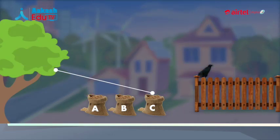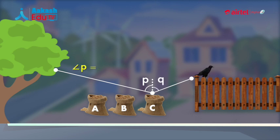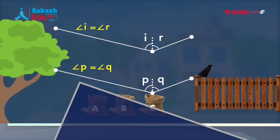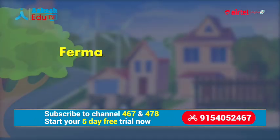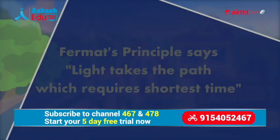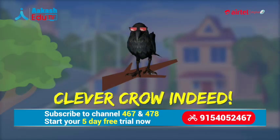For opting C and finally reaching the fence, aap dekhenge angle P ki value angle Q ke equal hai. In other words, this path resembles the path of light where incident and reflected angles are equal — or the famous Fermat's principle of optics ke according, this takes the minimum time. Clever crow indeed.